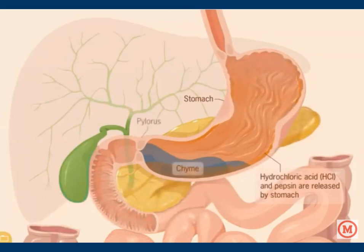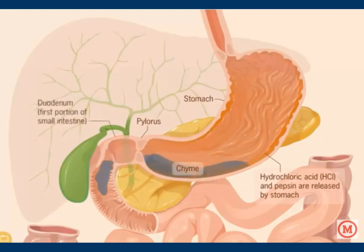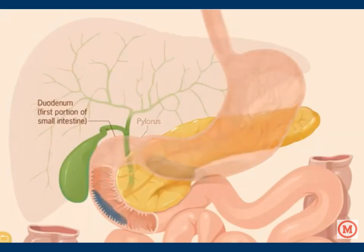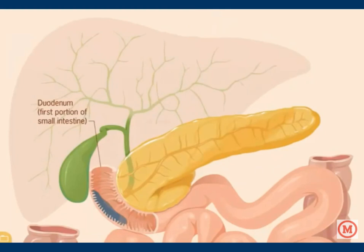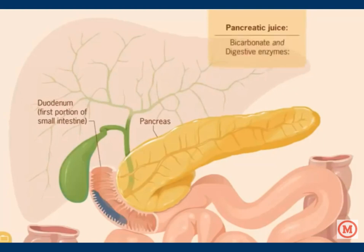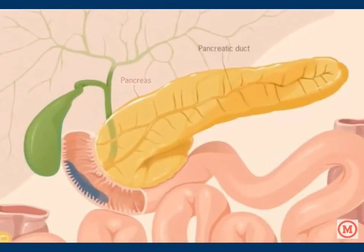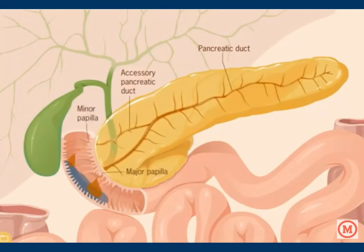When the chyme reaches its proper softness, the pylorus opens and the chyme is slowly released into the first portion of the small intestine, called the duodenum. It is within the duodenum that the chyme mixes with pancreatic juice and bile. The process of digestion causes neural and hormonal stimulation of the pancreas to release pancreatic juice. The juice contains digestive enzymes and bicarbonate. The major digestive enzymes are amylase, which digests carbohydrates; lipase, which digests fats; and protease, which digests proteins. The juice flows through pancreatic ducts and is released into the duodenum through the major and minor papillae, where it mixes with the chyme.